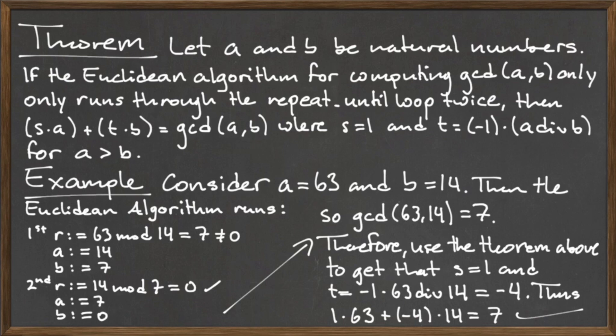63 div 14 is equal to 4, so t is equal to negative 1 times 4, which is negative 4. So we can write 1 times 63 plus negative 4 times 14 is equal to 7.